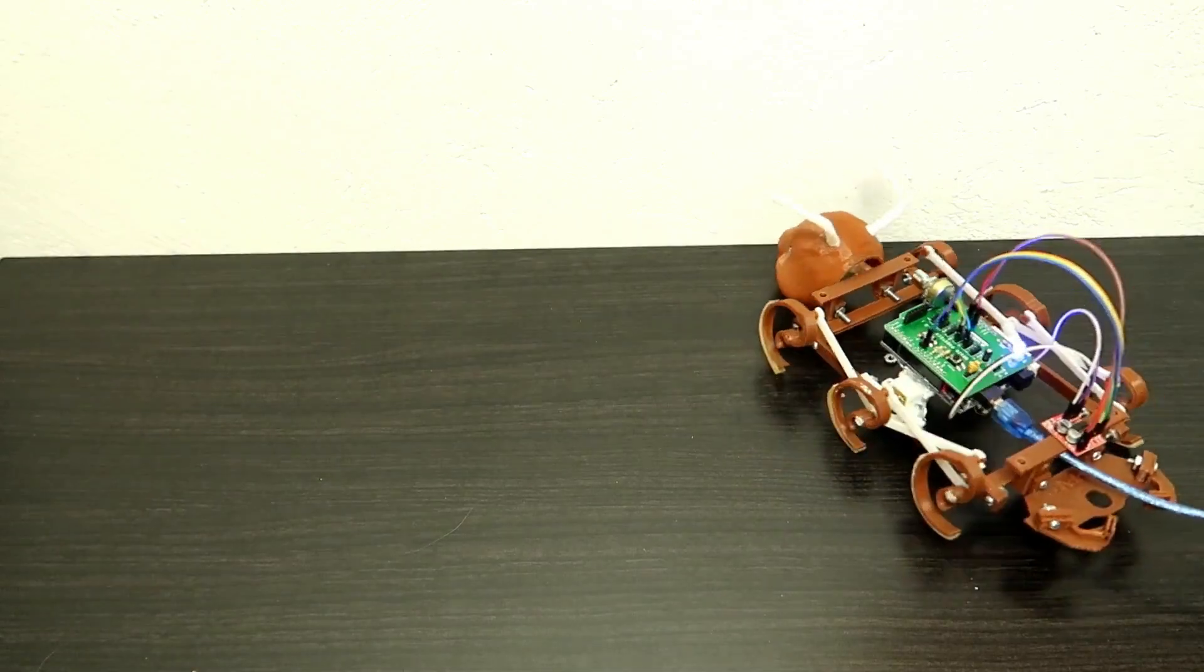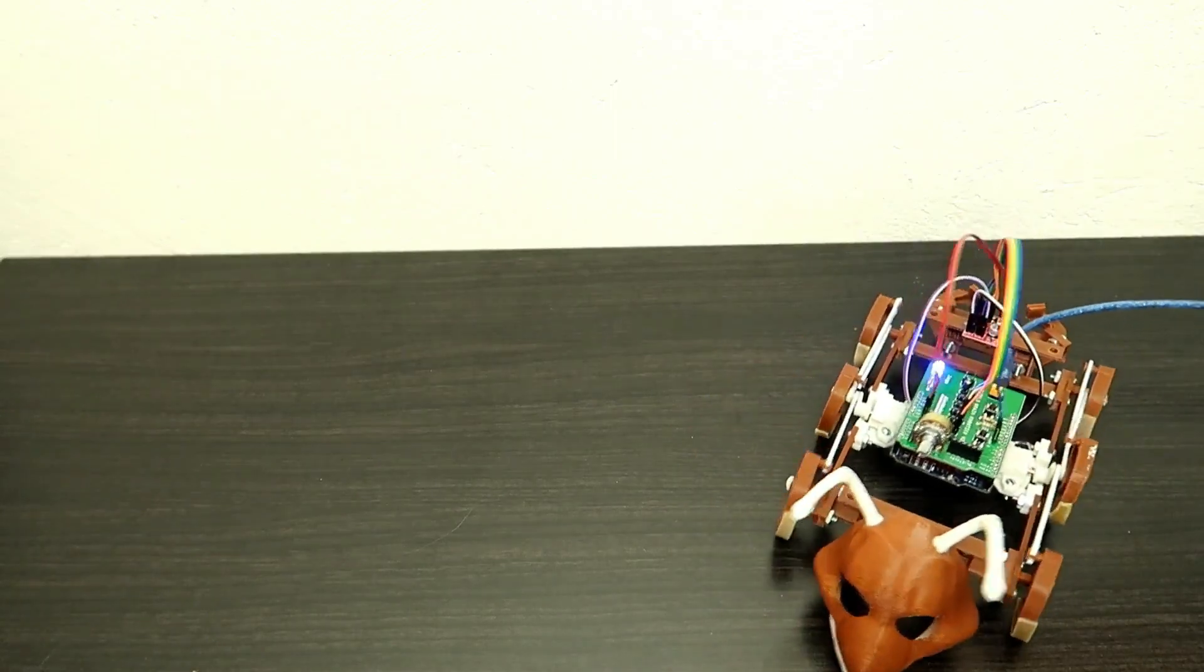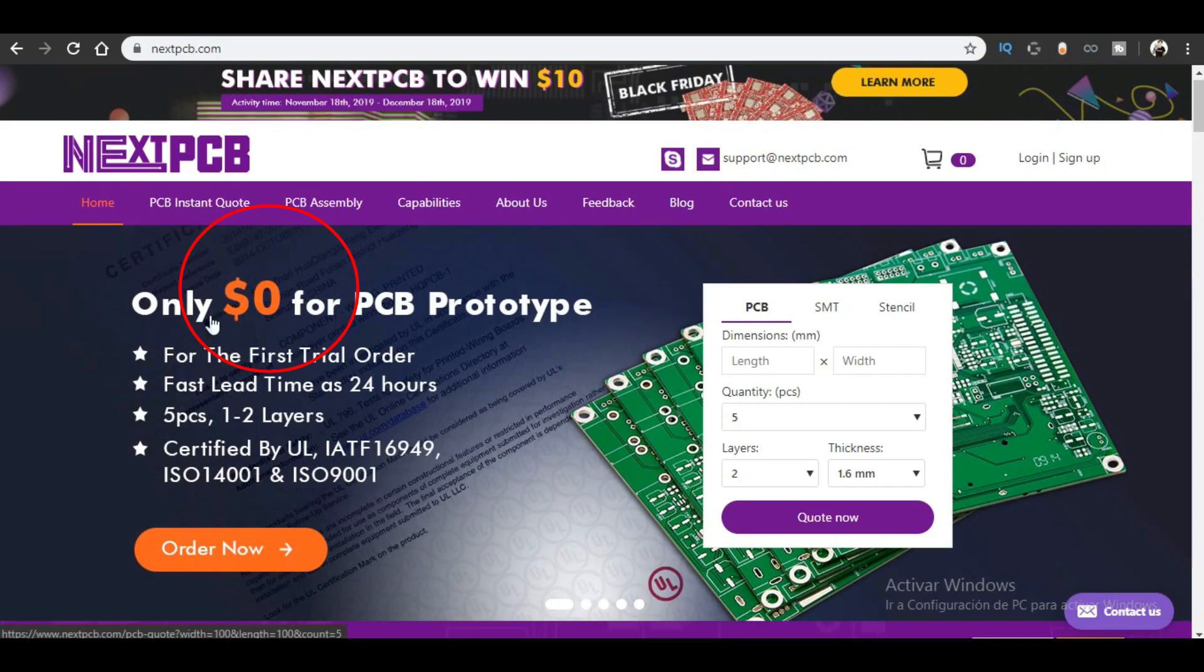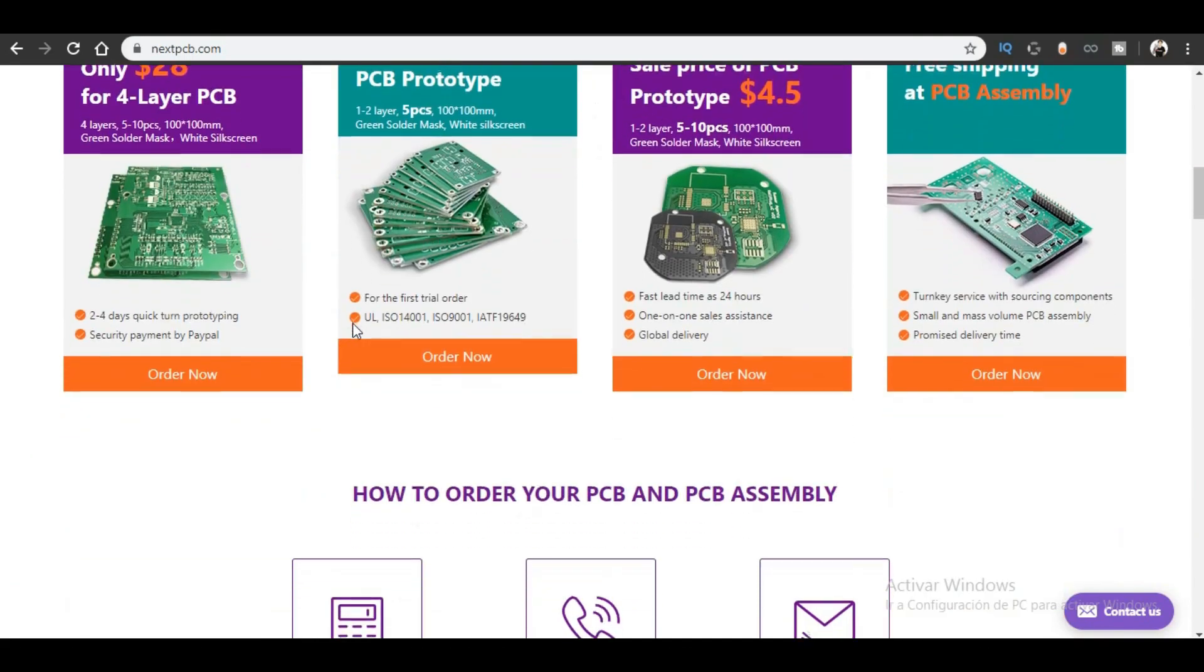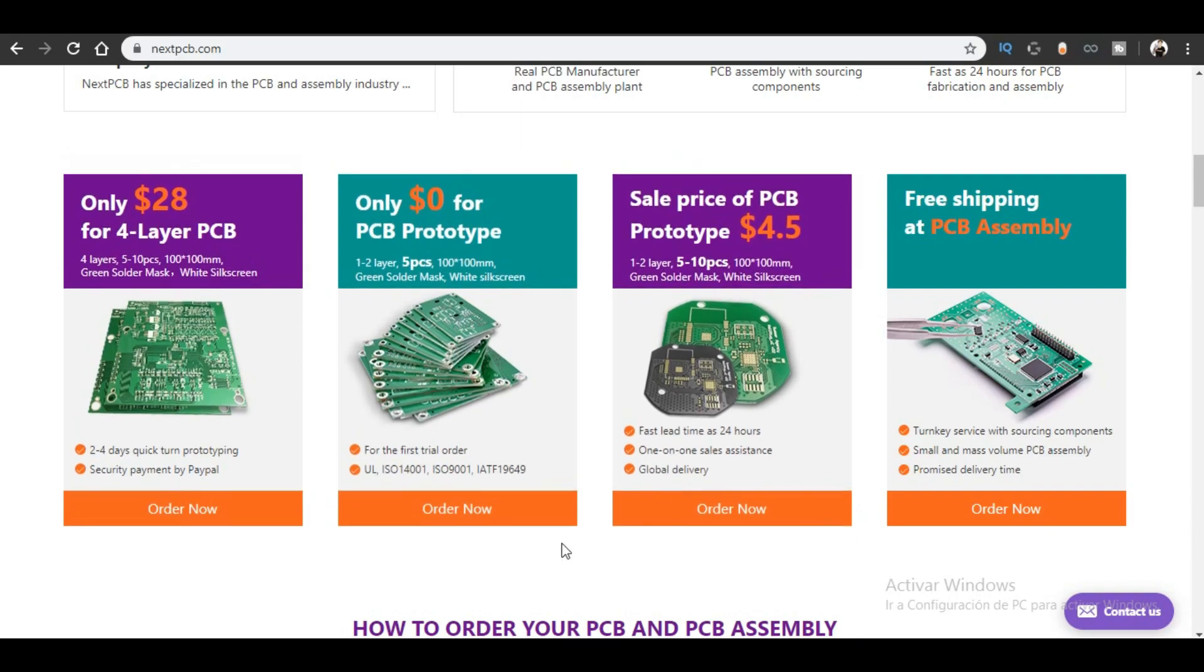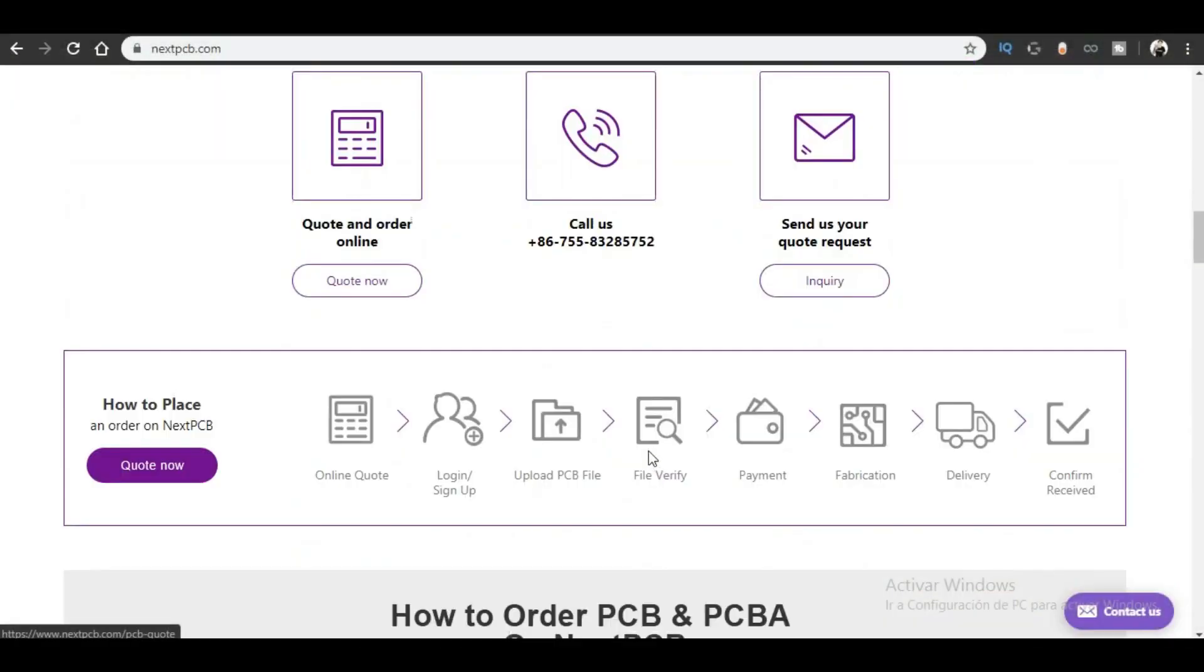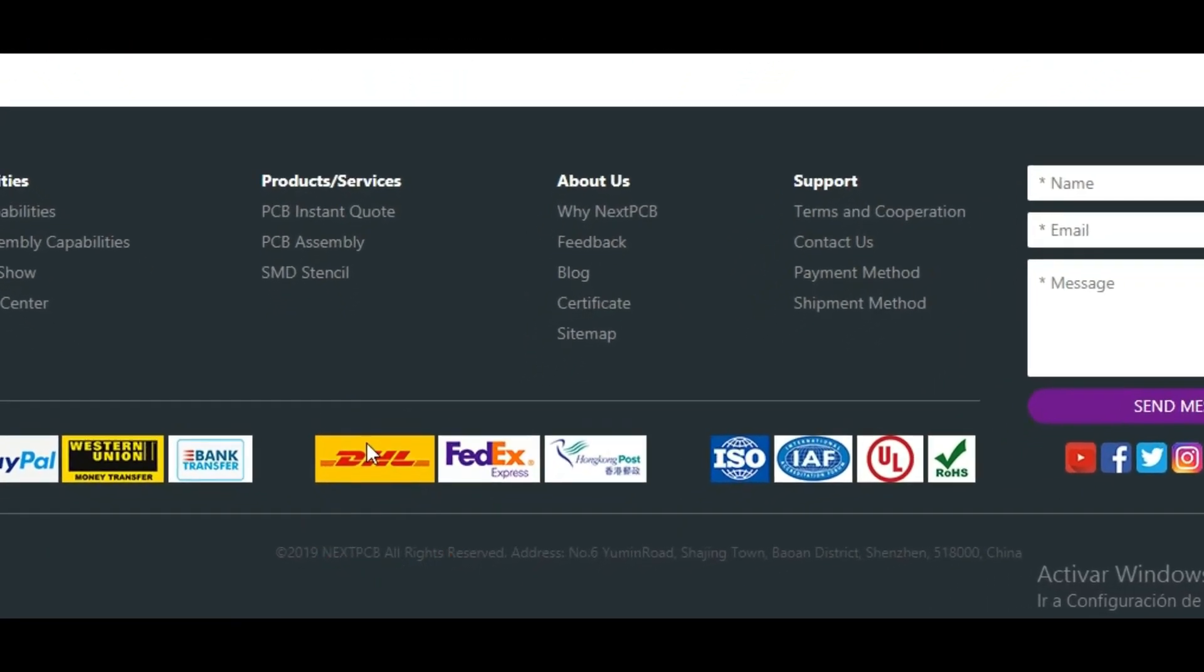Este video está patrocinado por los amigos de NextPCB. Recuerden que en su primer producto el tipo es gratuito. Tienen 5 piezas de una o dos capas y están certificados. Chicos, han estado lanzando nuevos servicios, por ejemplo aquí en el PCB tienen hasta un descuento de 30 dólares en la tarifa de envío y podrán ofrecerlo a nivel mundial.